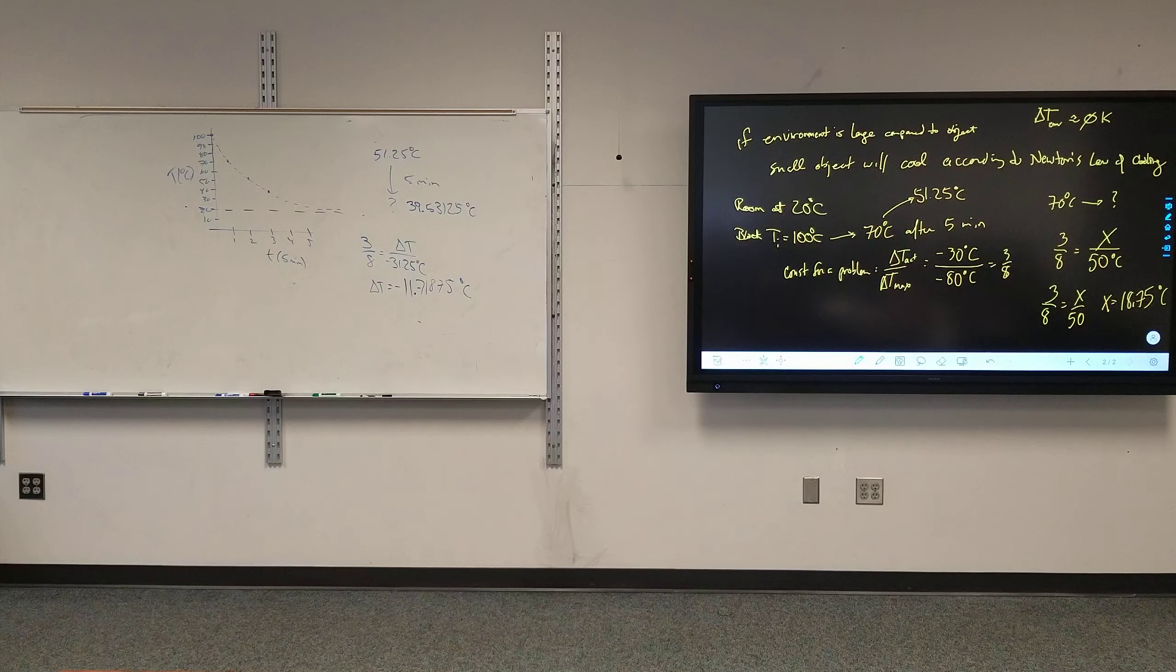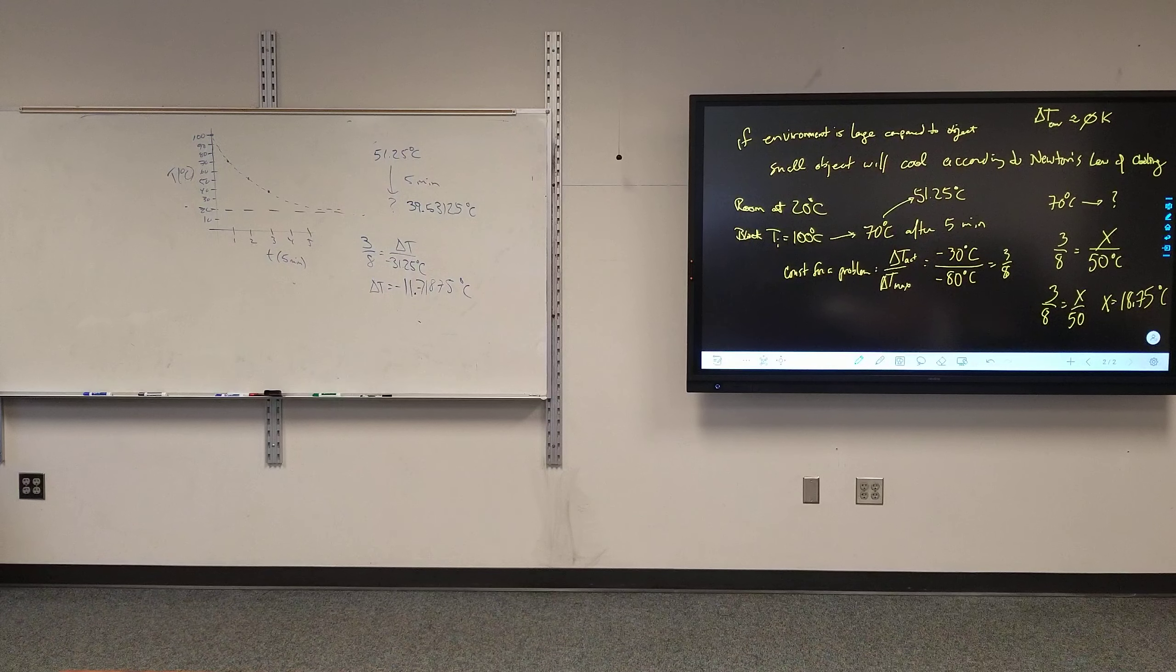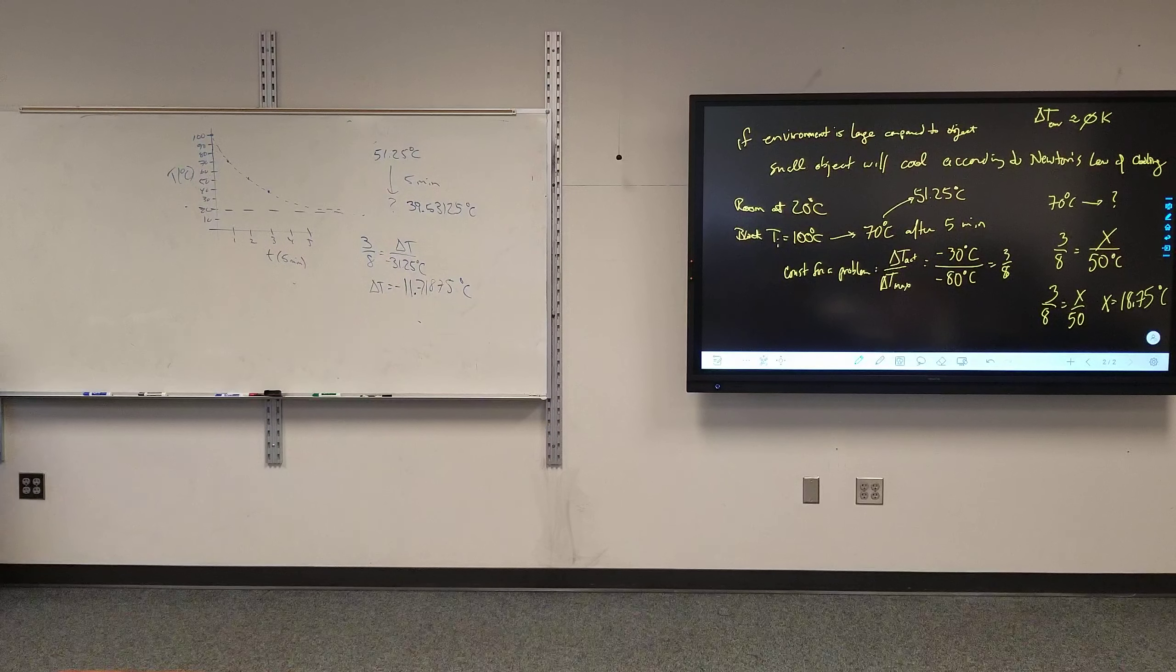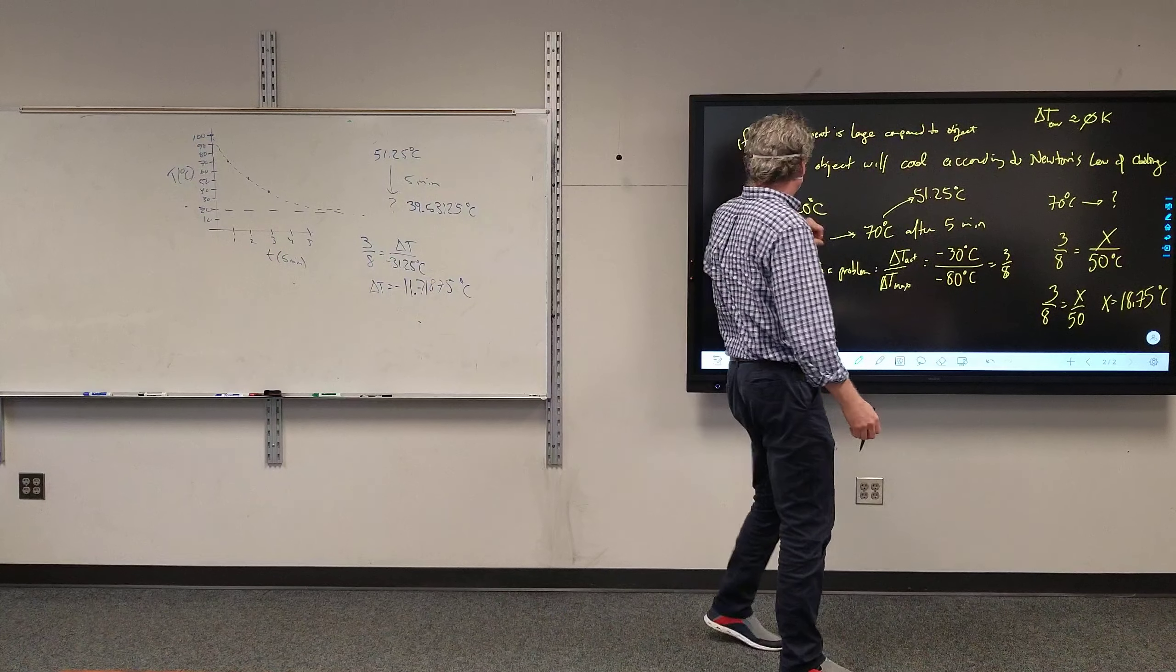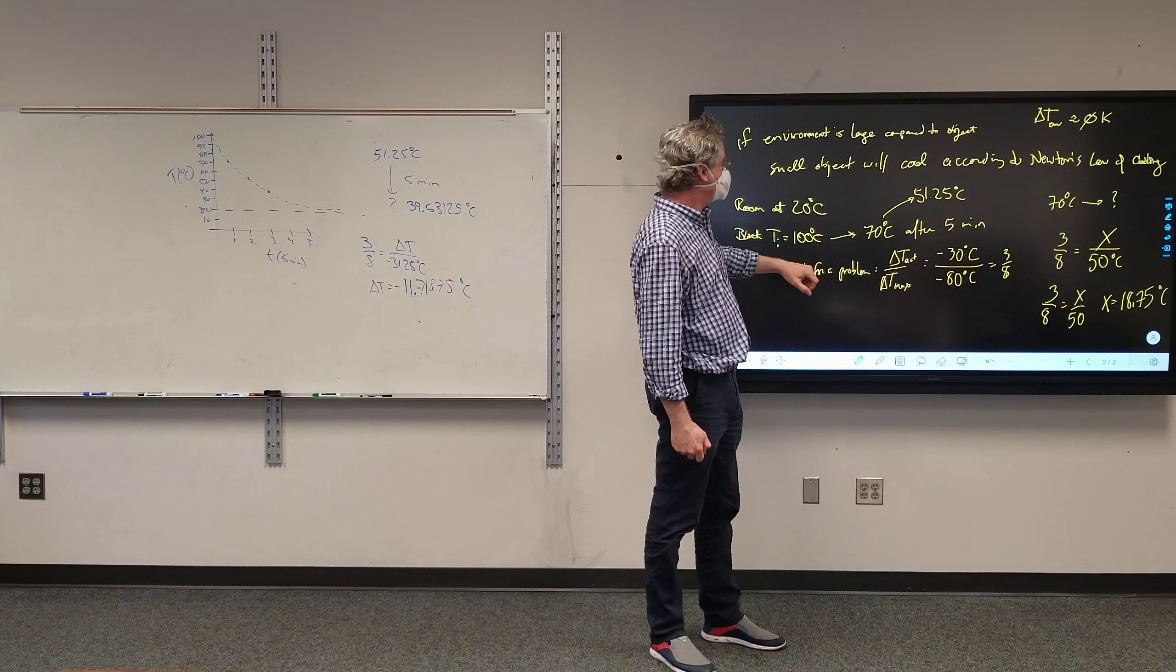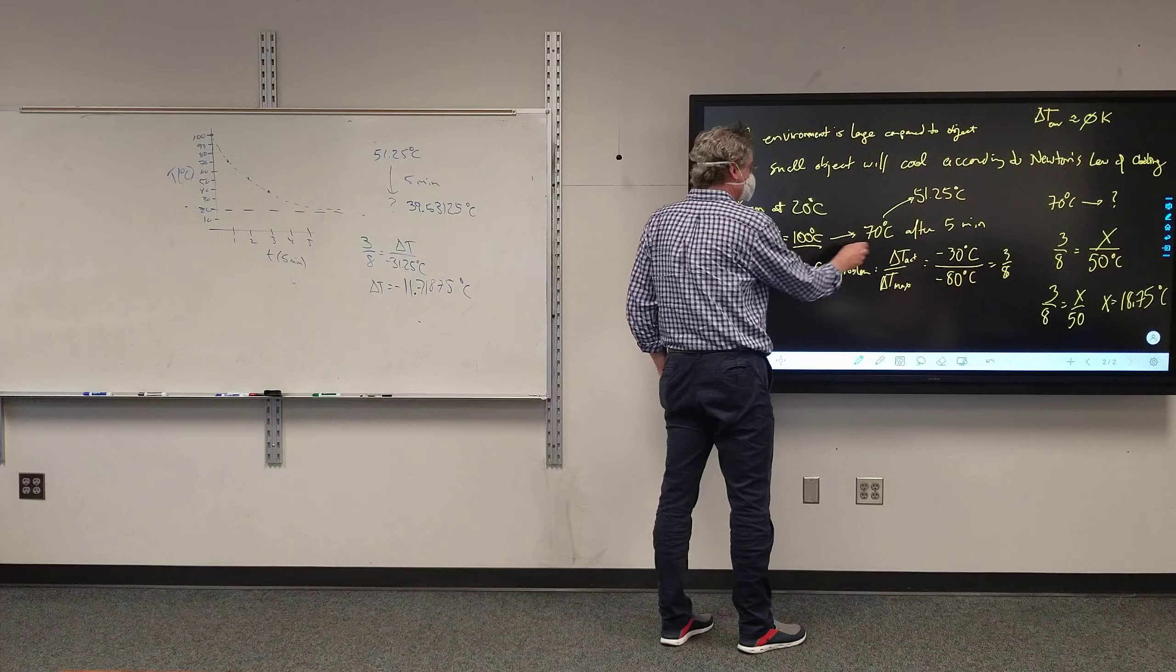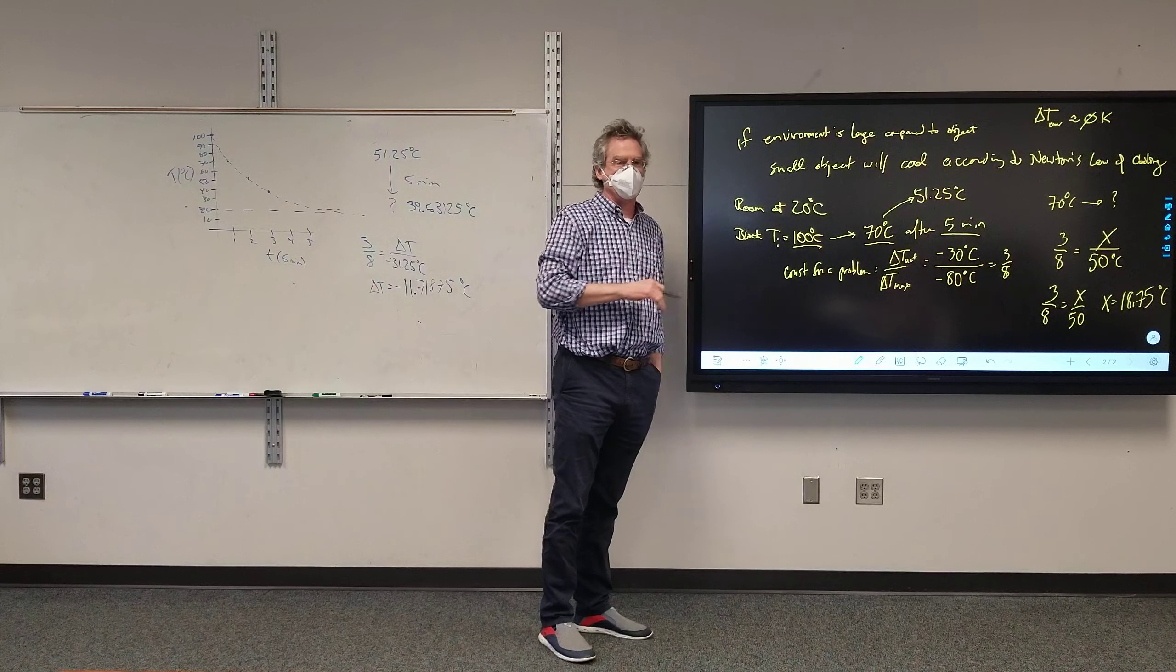But Newton's law of cooling... Could you explain again how you, where the 50 degrees Celsius came from? Did you just choose that randomly? No, no, no, that's not random. The random parts are those, just setting up the problem. The rest of it just becomes set.